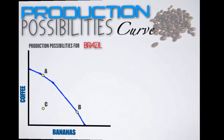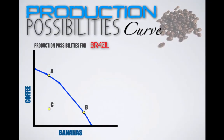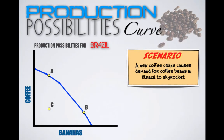Provided is the PPC for Brazil. Let's say that a new coffee craze causes demand for coffee beans in Brazil to skyrocket. Social needs have changed and Brazilians want more coffee. With an ability to produce coffee and bananas, Brazil should begin to allocate its resources towards coffee production and away from banana production to meet the needs of society. There's been no change in any of the three determinants of PPCs, meaning there's not going to be a shift in the Brazilian production possibilities curve. Instead, Brazil is going to move from Combination B to Combination A, where it will produce less bananas and more coffee.